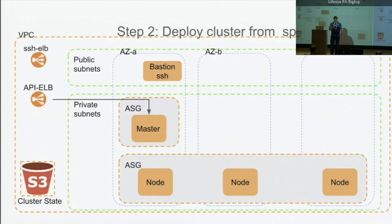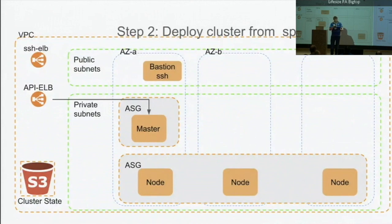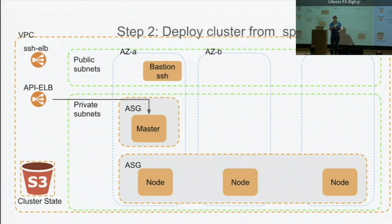Step two: the deployment. This is what the first step will create. It creates your public subnets, an SSH ELB so you can SSH into the bastion and all the nodes afterwards. It creates the three availability zones — a subnet in each of those availability zones, your worker nodes, and your master. It creates the S3 bucket as well so it stores all its state. And all this is automatically scripted and set up. It's all hands off. One command, done.